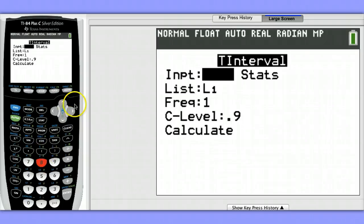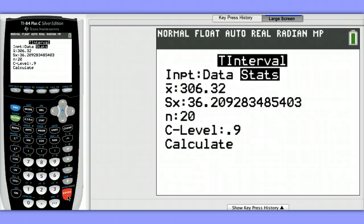But instead of data, we'll be entering the statistics, the sample statistics, the sample mean, the sample standard deviation, and the sample size. We'll be entering sample data that was collected from 40 light duty engines. And this was the nitrogen oxide emission from this random sample of 40 light duty engines.